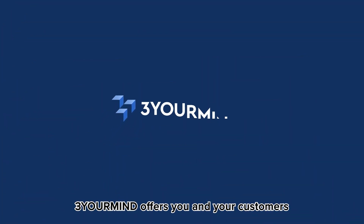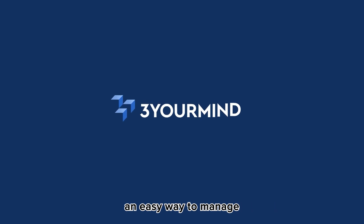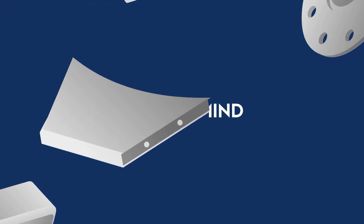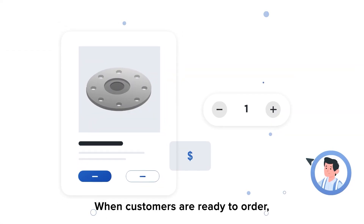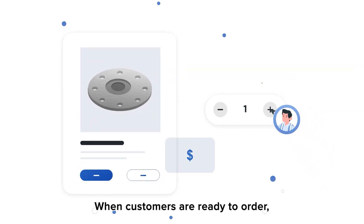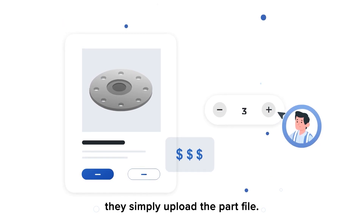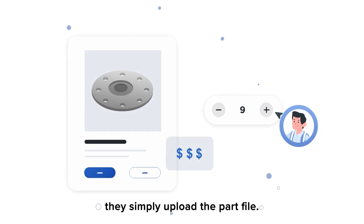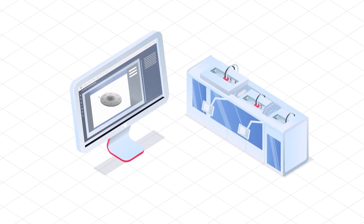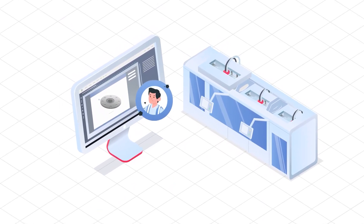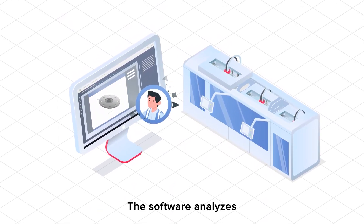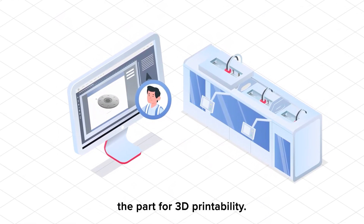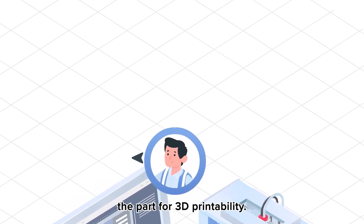Three or Mine offers you and your customers an easy way to manage 3D printed part orders. When customers are ready to order, they simply upload the part file. The software analyzes the part for 3D printability.